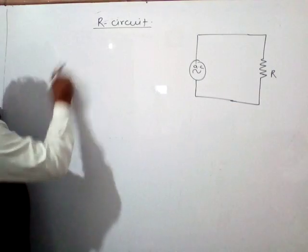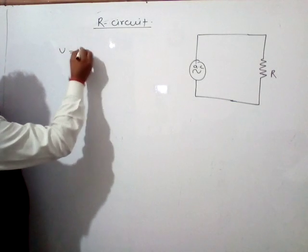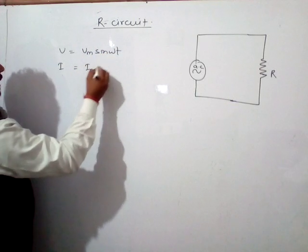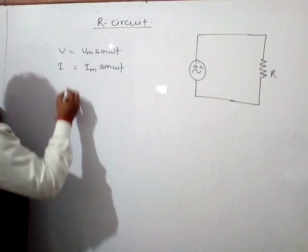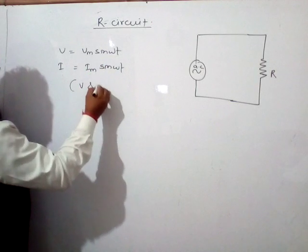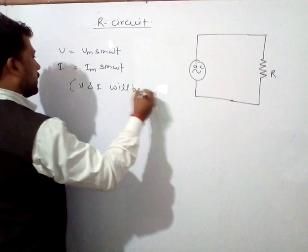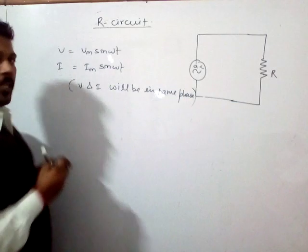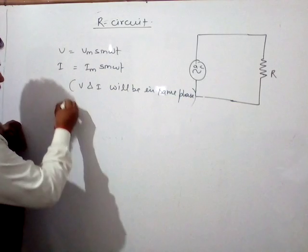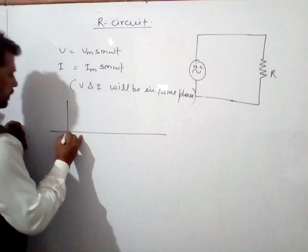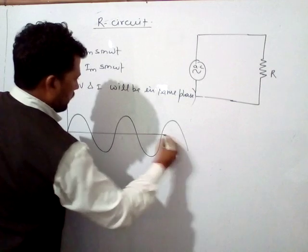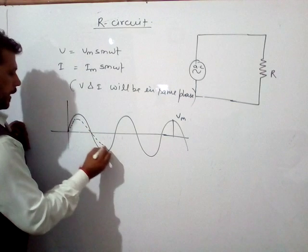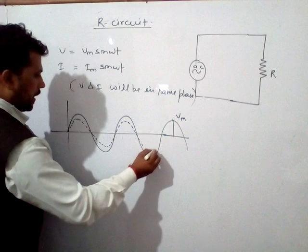In this situation, both voltage and current will be in the same phase. V equals Vm sin(ωt) and I equals Im sin(ωt), meaning V and I are in the same phase.